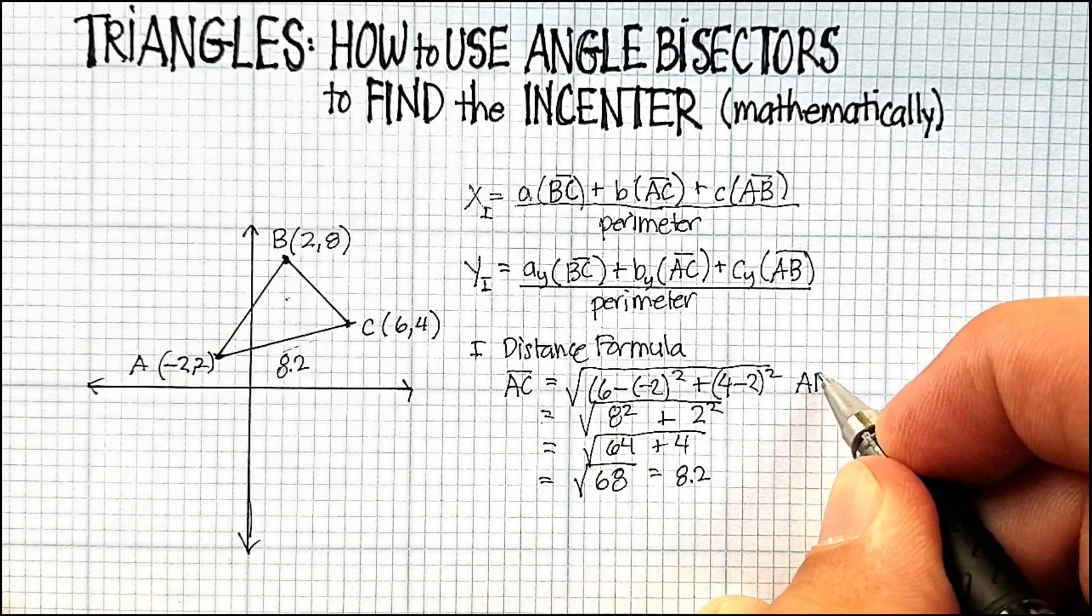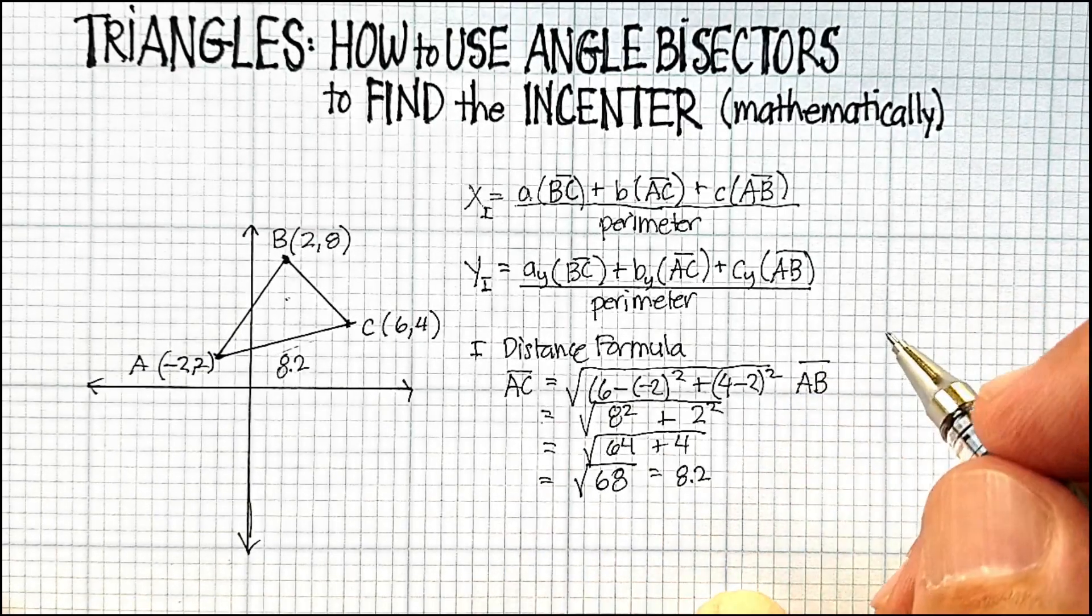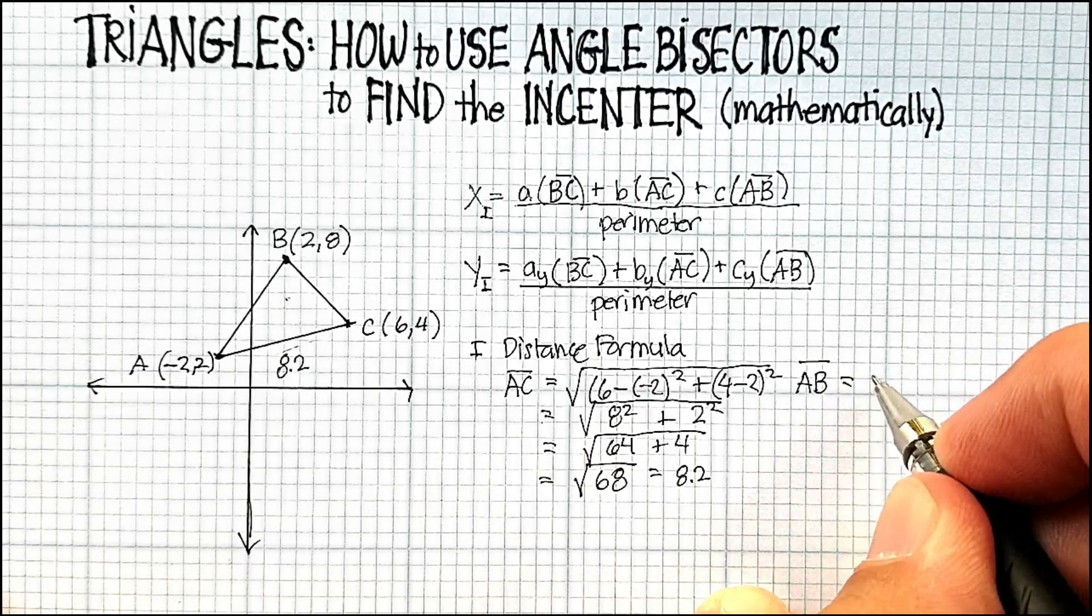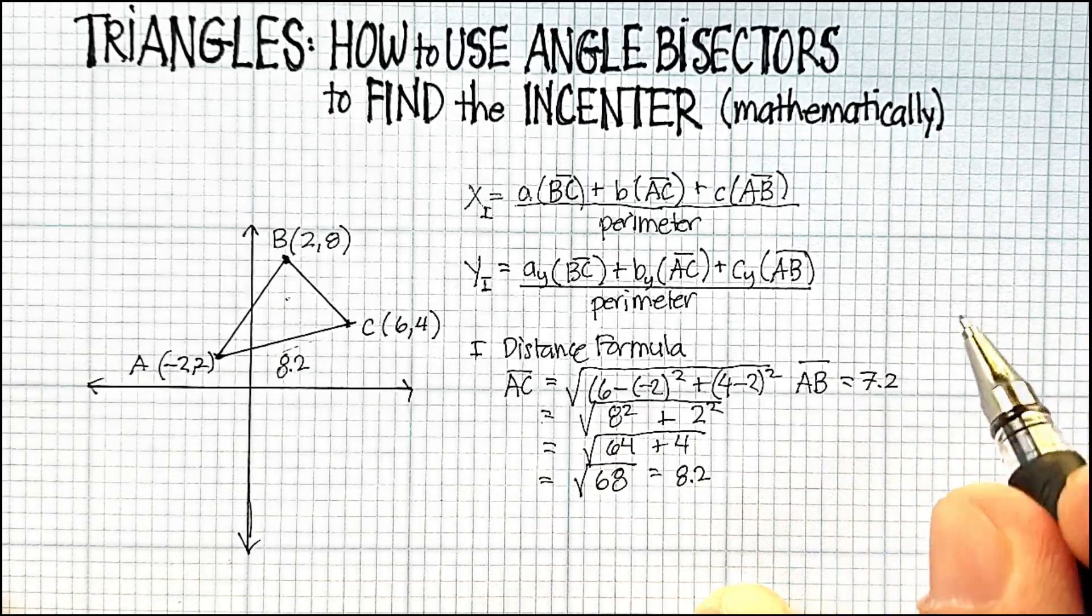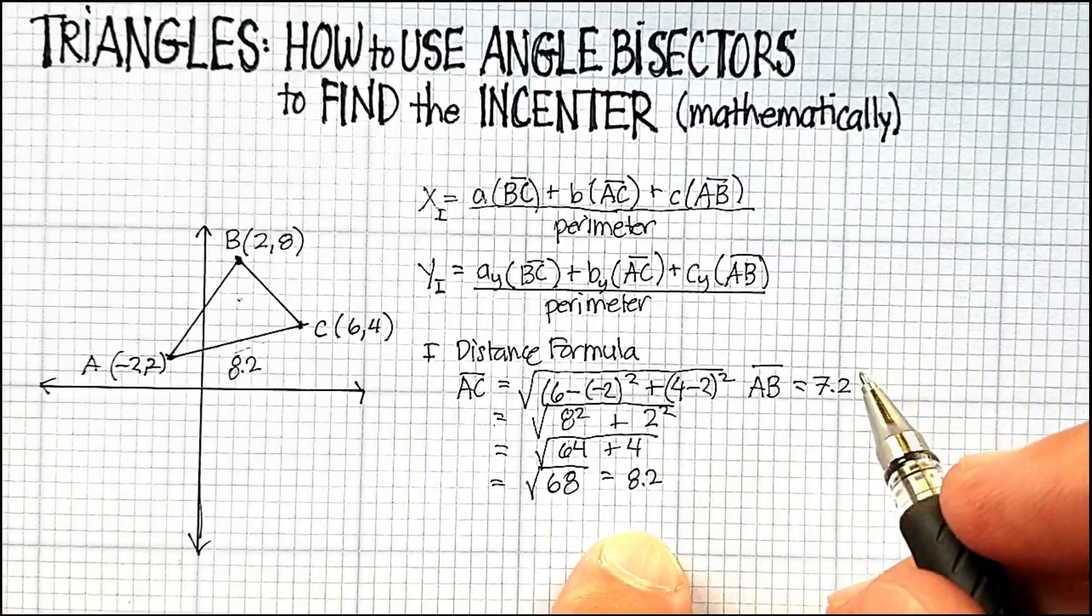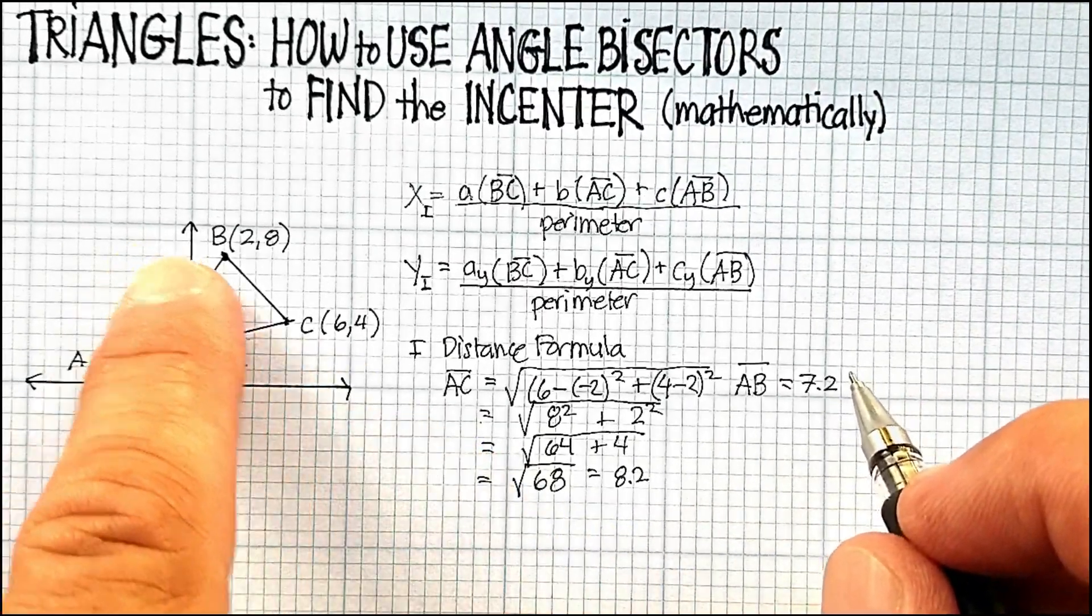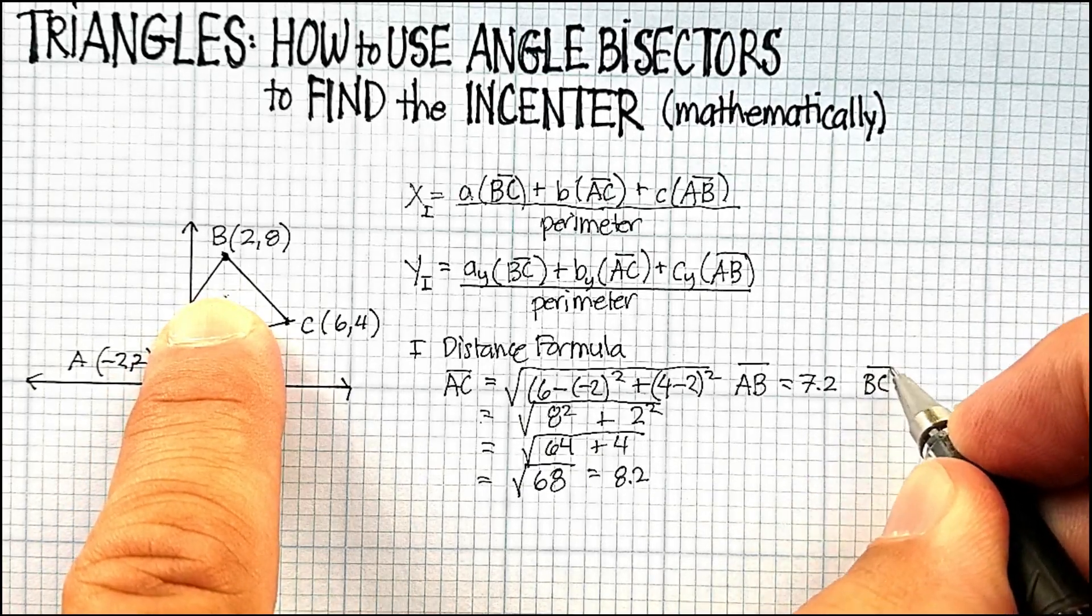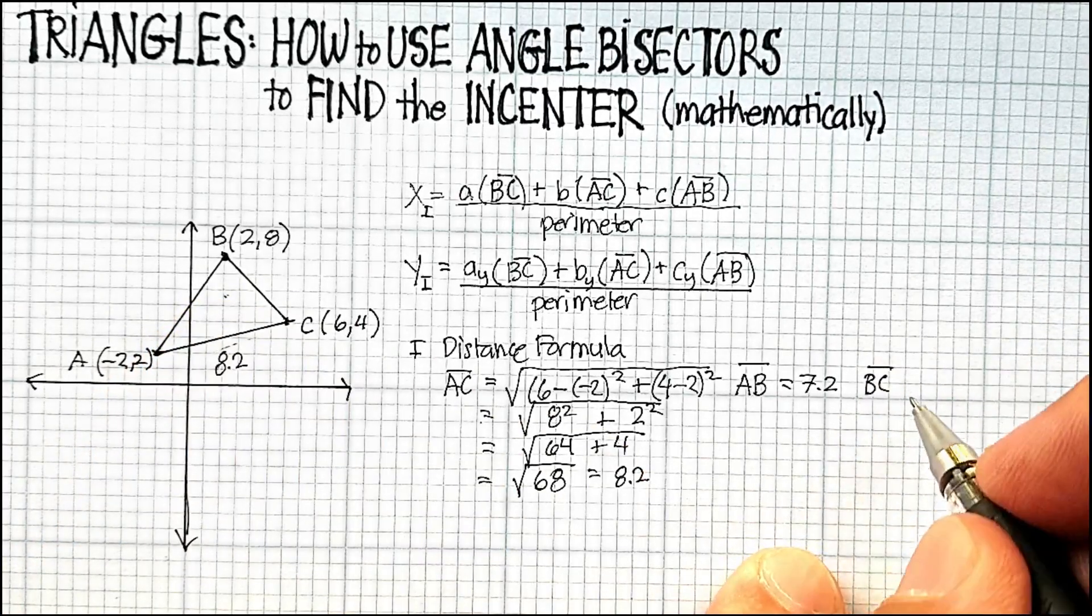And the distance that I found for AB is 7.2. You can go ahead and do your own calculations and see if it matches up to mine. And then the distance for BC, I found to be 5.7.